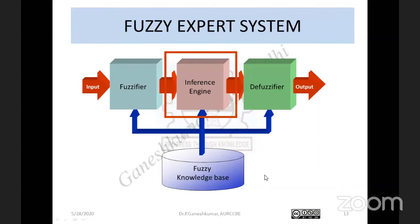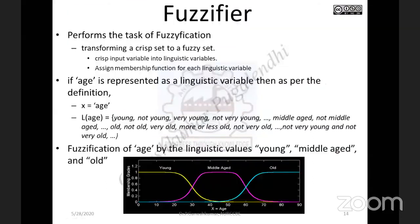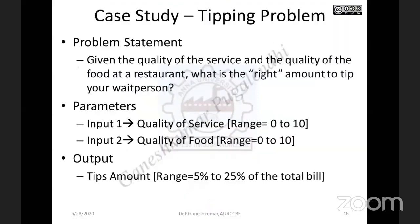The Fuzzy Knowledge Base consists of two components: one is the database, and another is the rule base. Among the four components, the most important is the Fuzzy Knowledge Base, followed by the Fuzzy-ifier component. The other two components are ready-made and available. The work you need to perform while developing a Fuzzy Expert System is these two components. Let me explain how to develop this Fuzzy Expert System with the help of a tipping case study — the tipping problem.